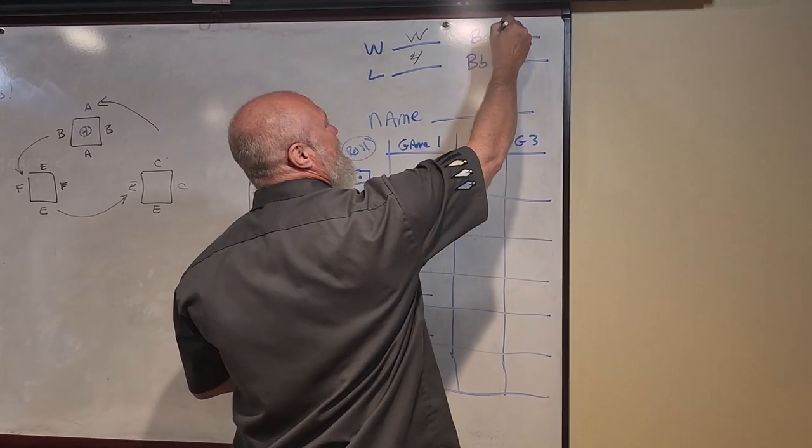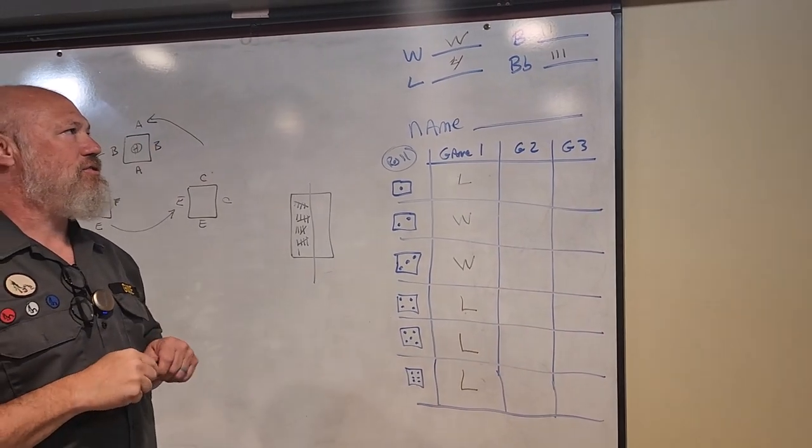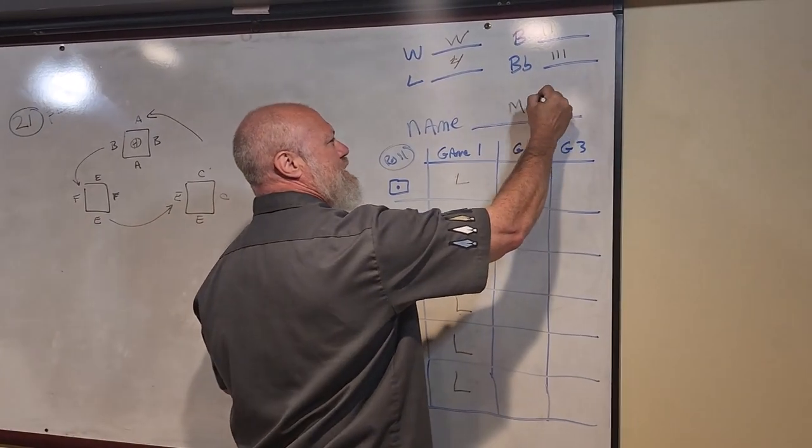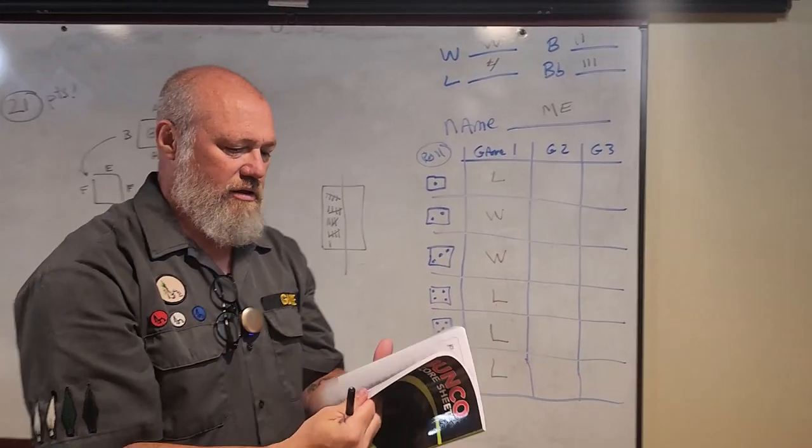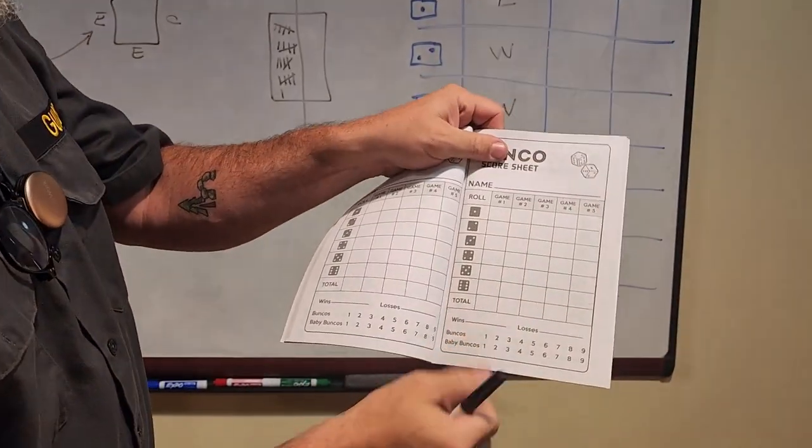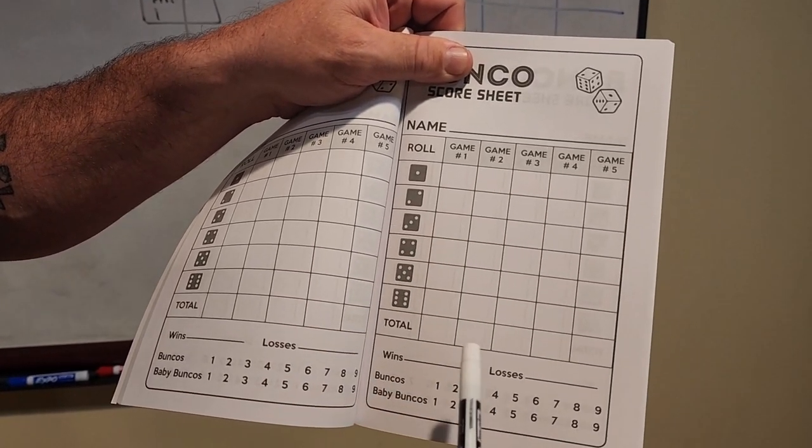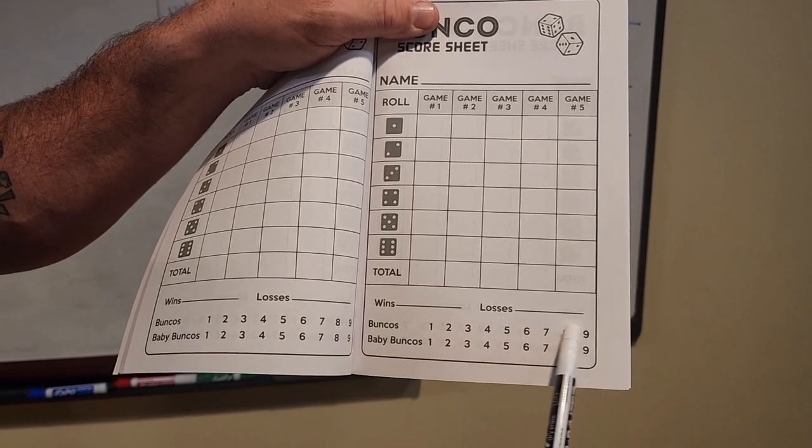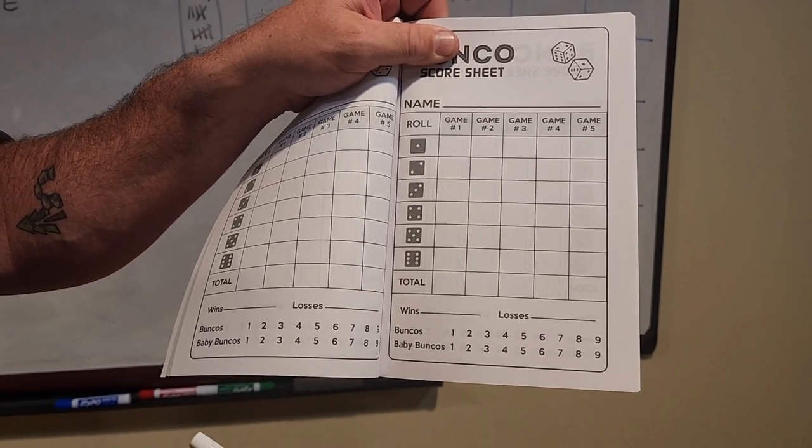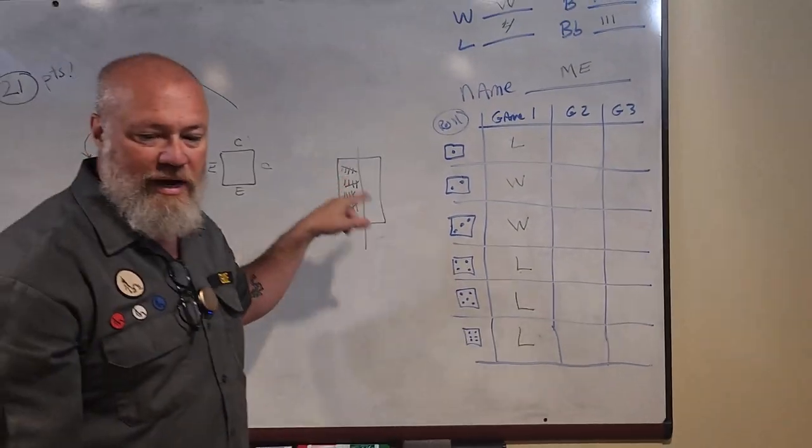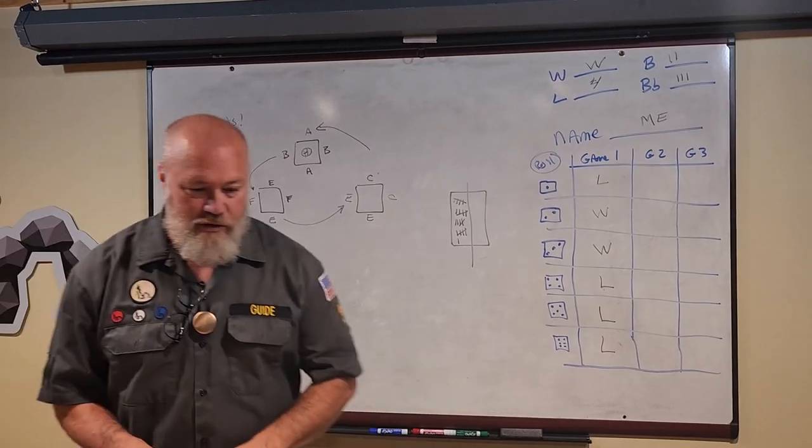The scorecards look just like I drew on the board. You keep track of all six of your rounds of game one, and then your total game two. These sheets have the bunkos laid out where you can just check them off as you go. Total wins, total losses. Scratch pad, just to keep track of the scratches to determine who wins. Now, how do you actually play the bunko?